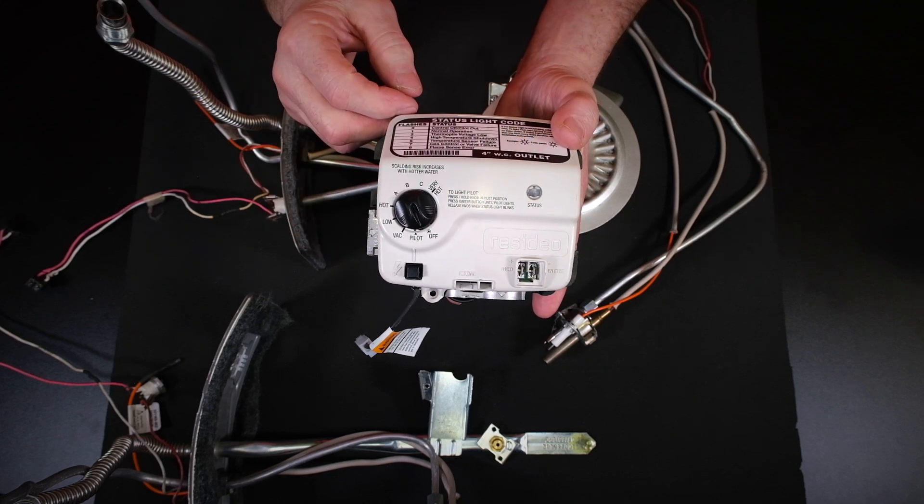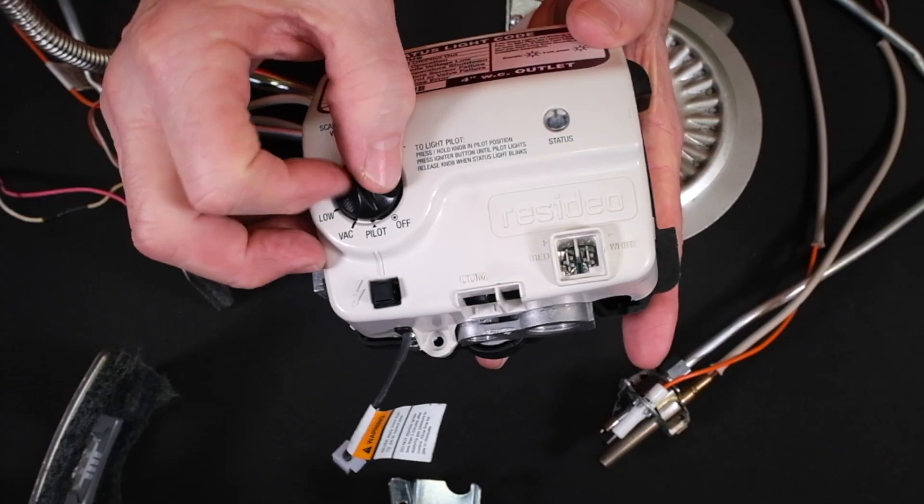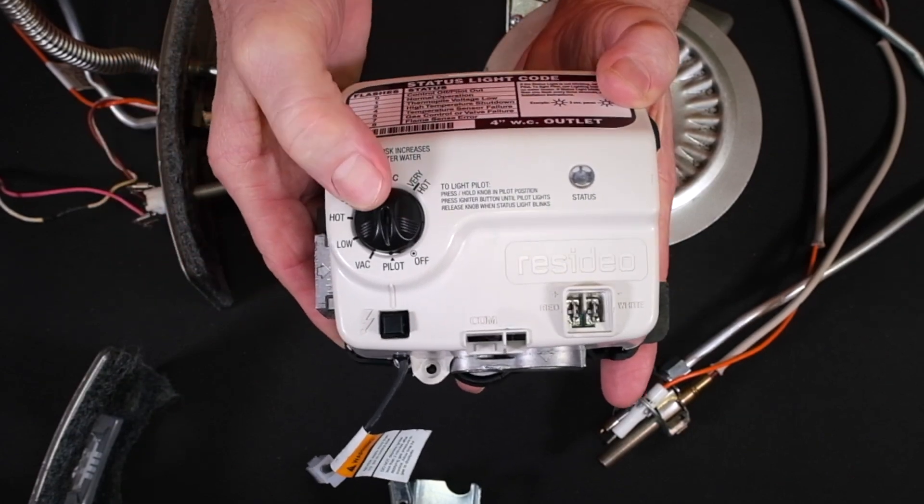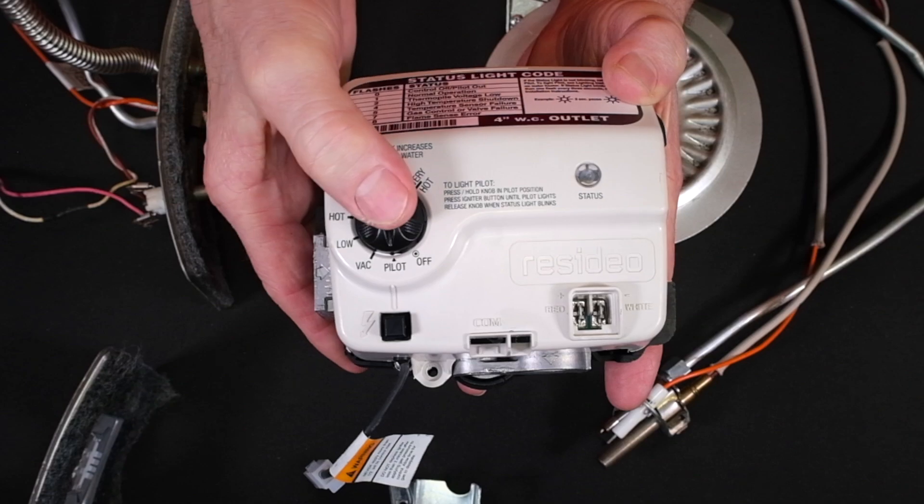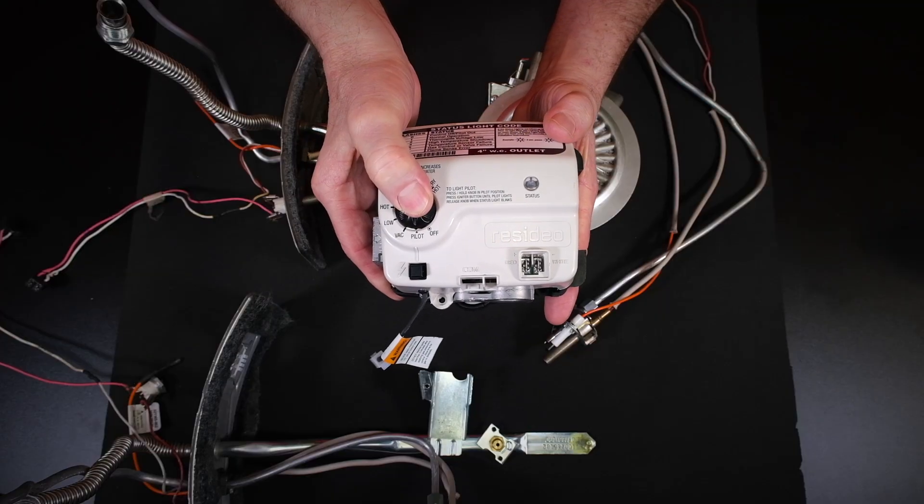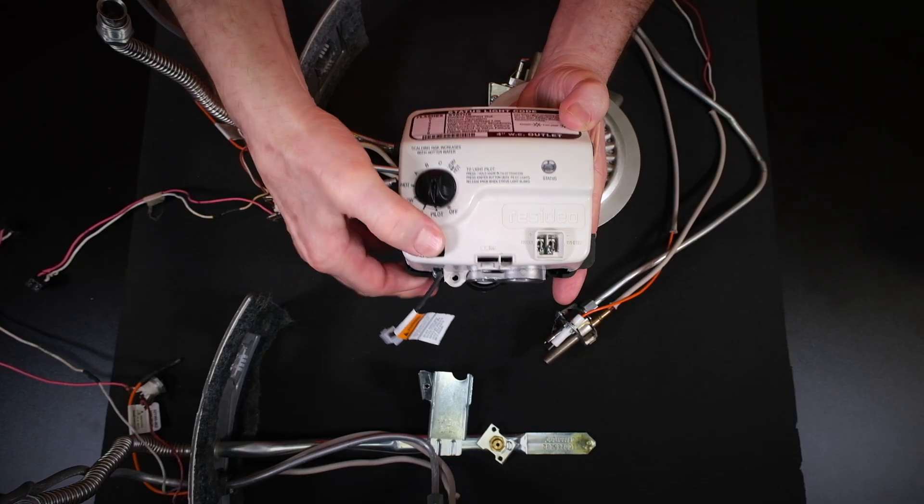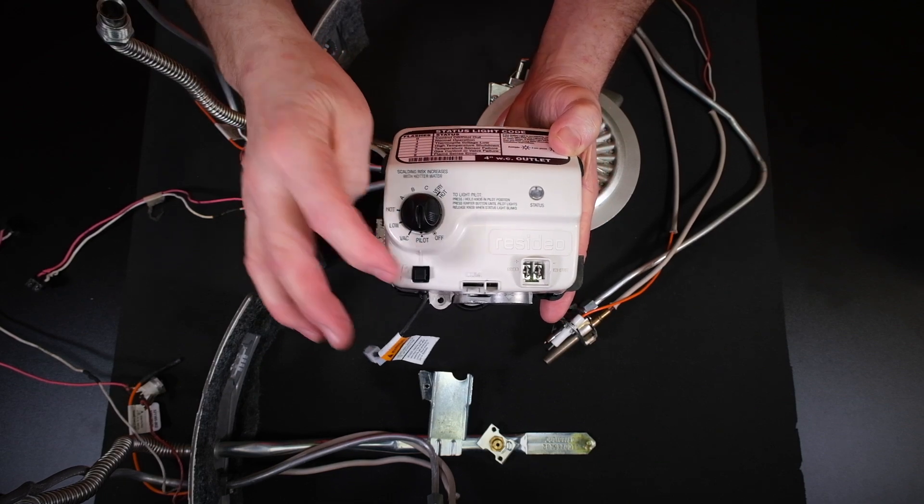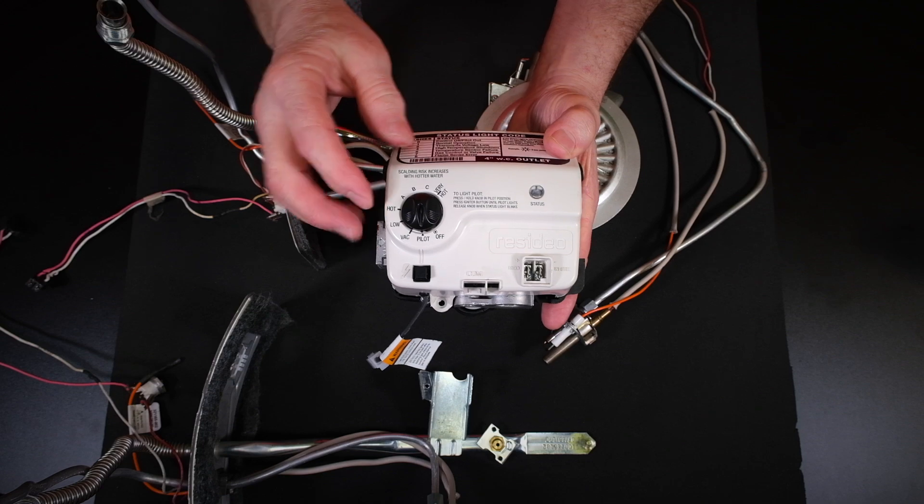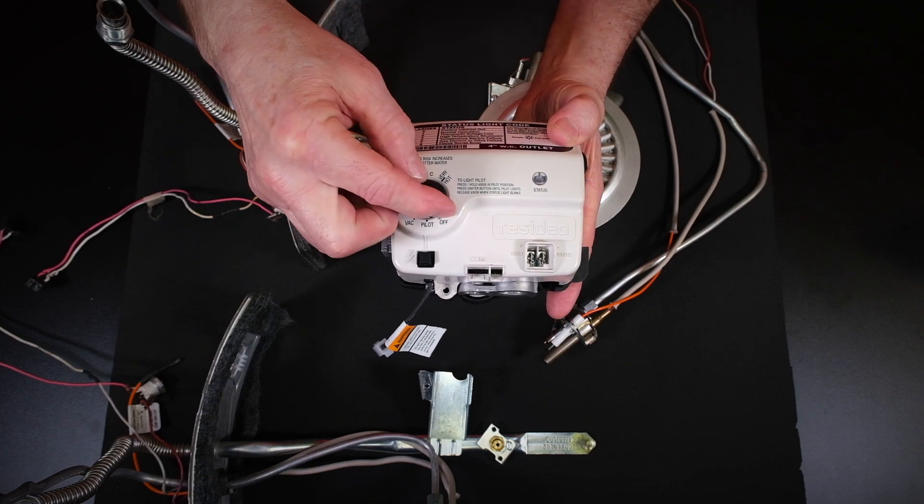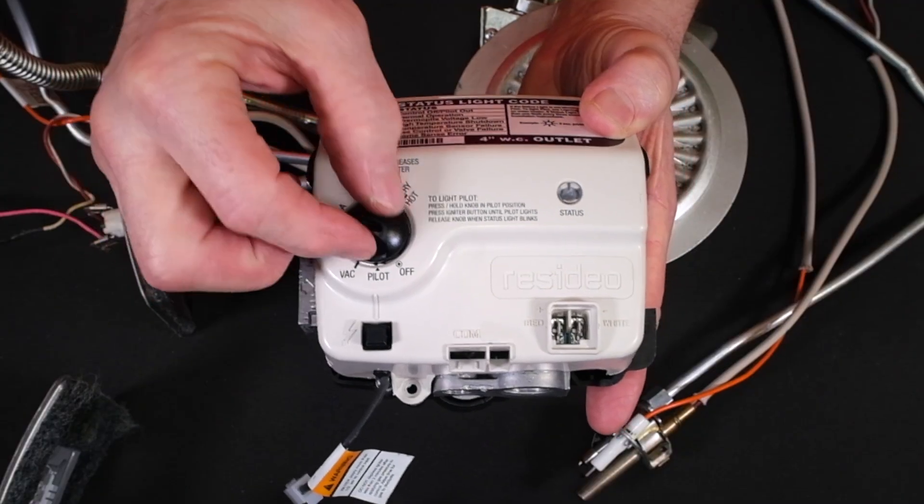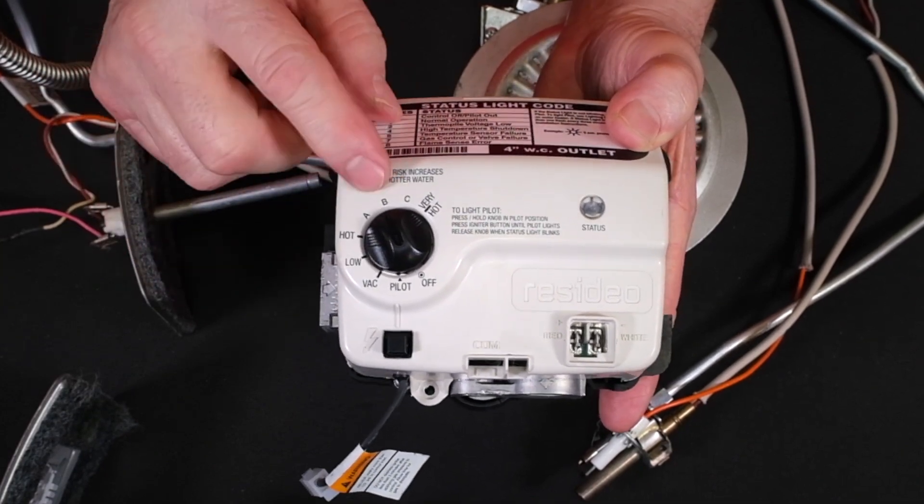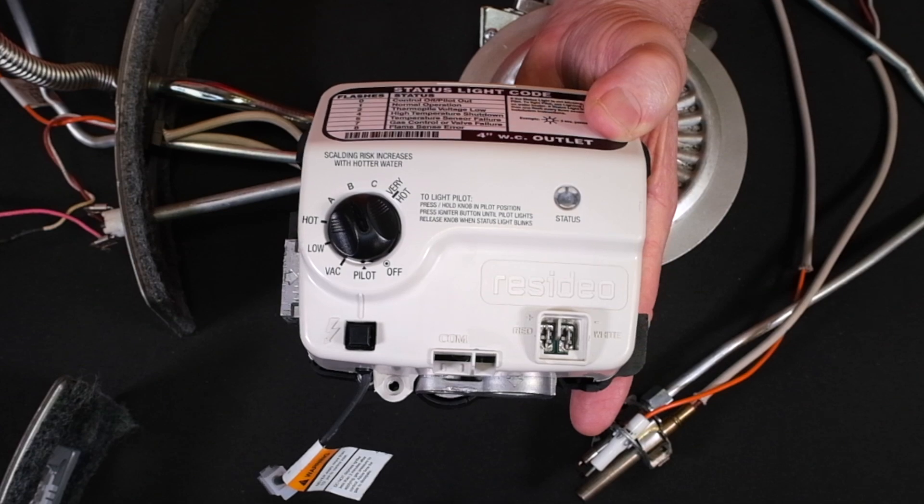Normally it's in the off position when you first get it. In order to light the pilot light, you'll turn it to pilot and this depresses. So you have to push this in, and while you're doing that, you have to press this spark igniter. You want to press that fairly quick. Once it lights, we're going to turn it up to generally between A and B. This is going to run your water somewhere in the neighborhood of 130 degrees.